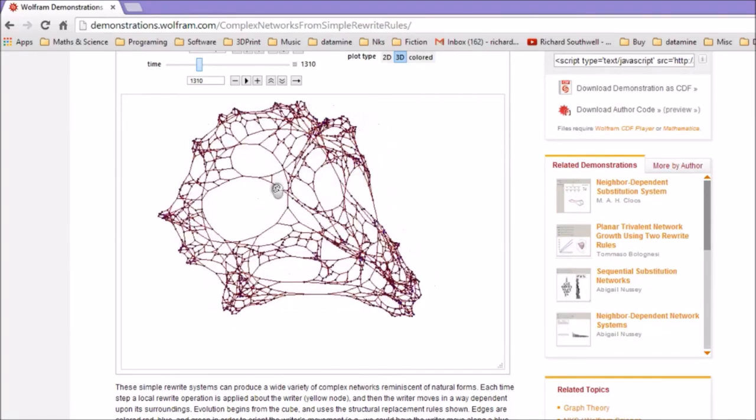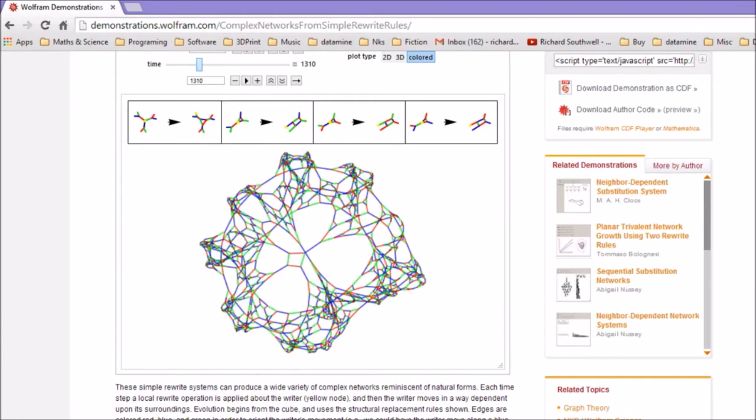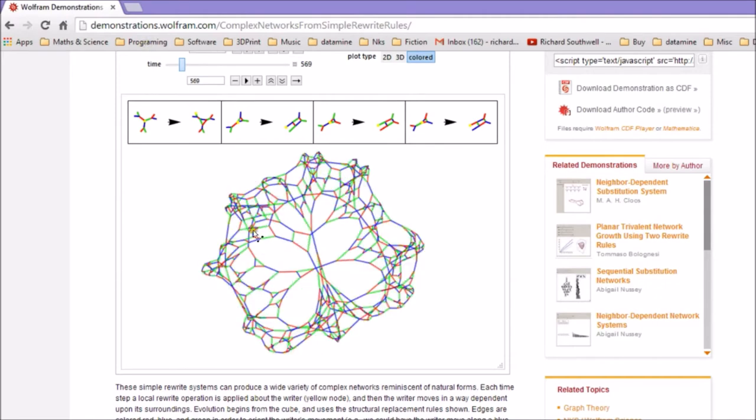And if you send me three of them and you're the first one to do that, I shall post you back a 3D print of some lovely hyperbolic network as I was just showing you. So here's this system run for a little less time step. You can see the rules at the top.